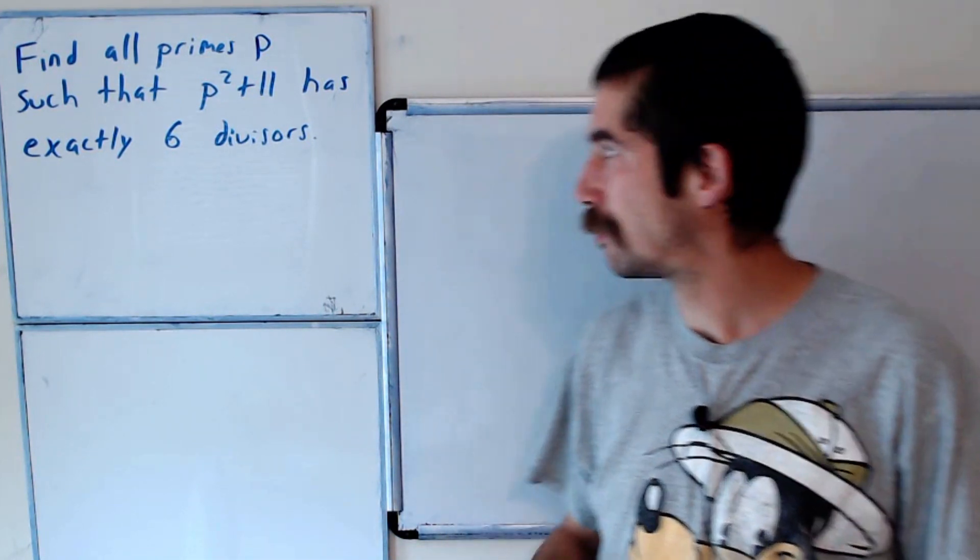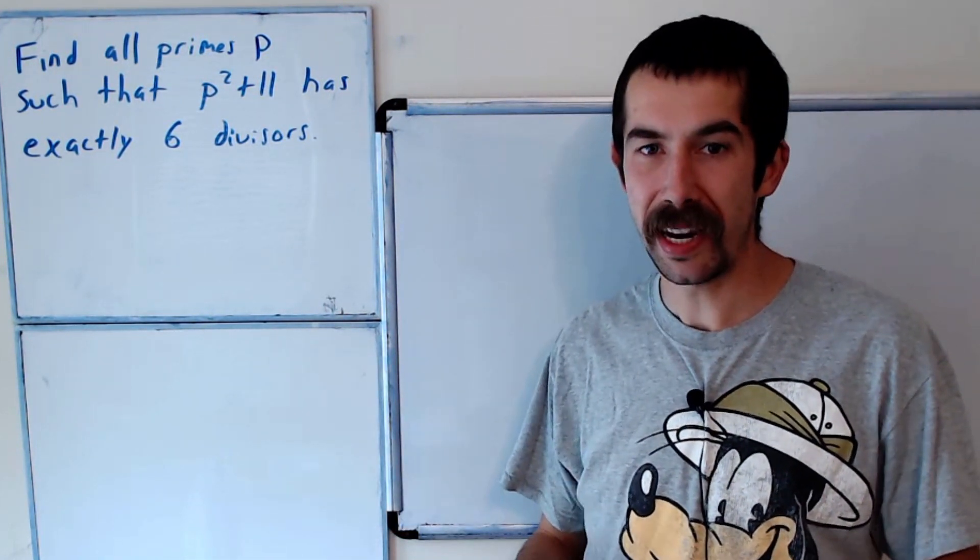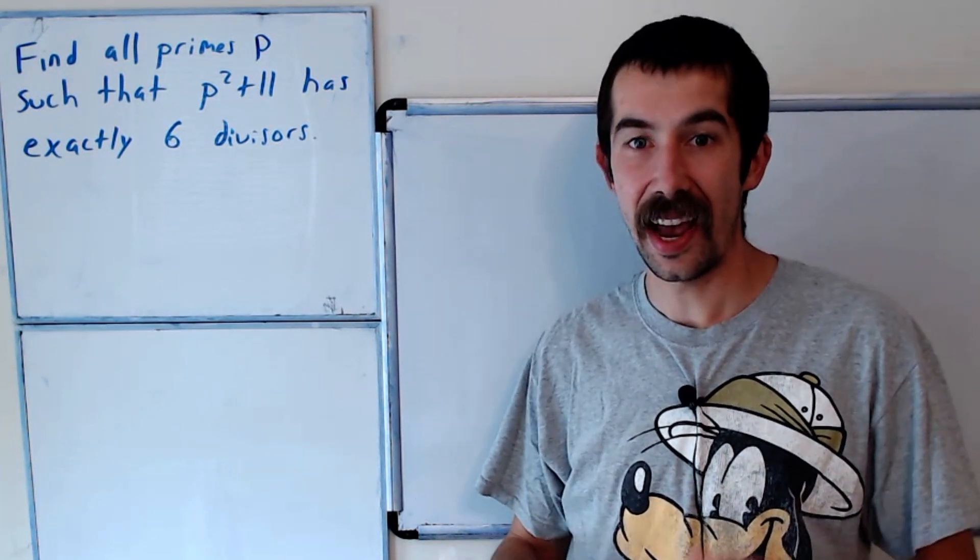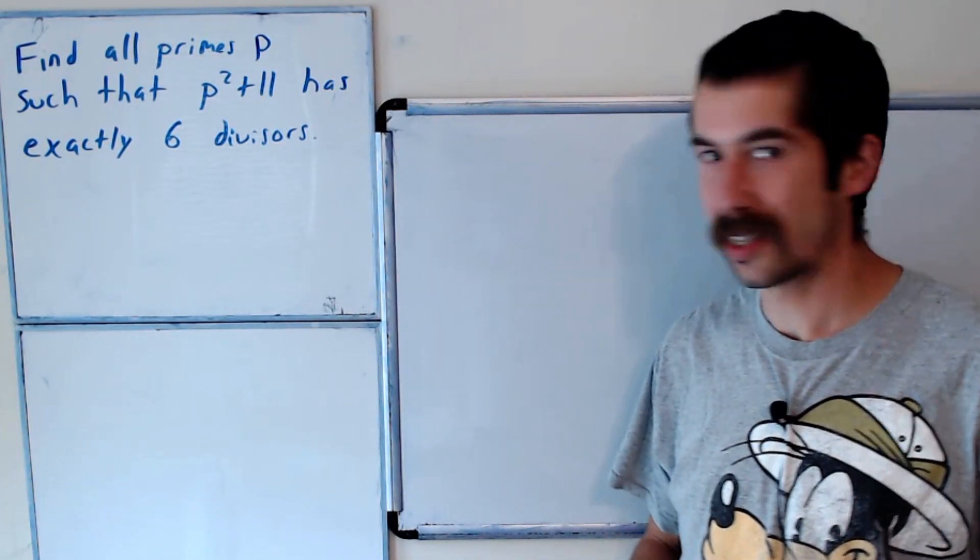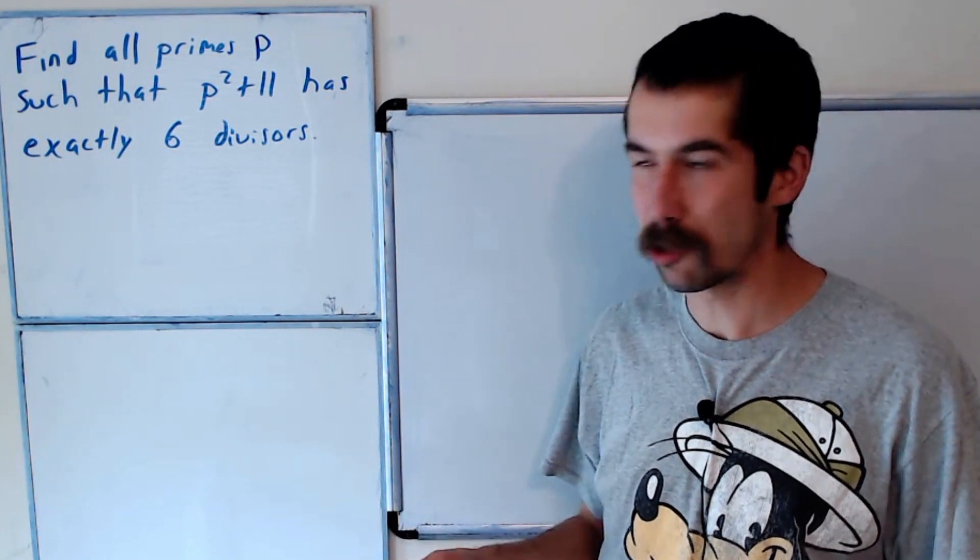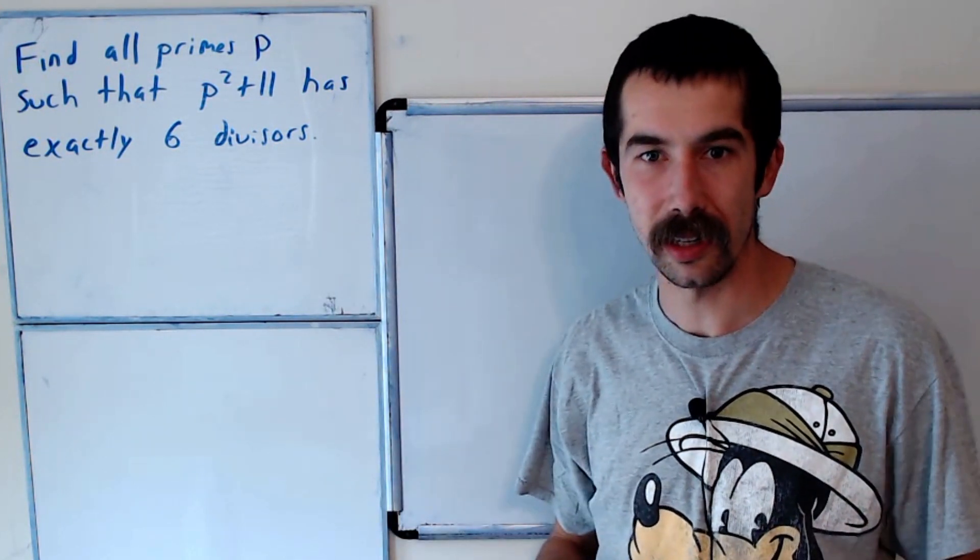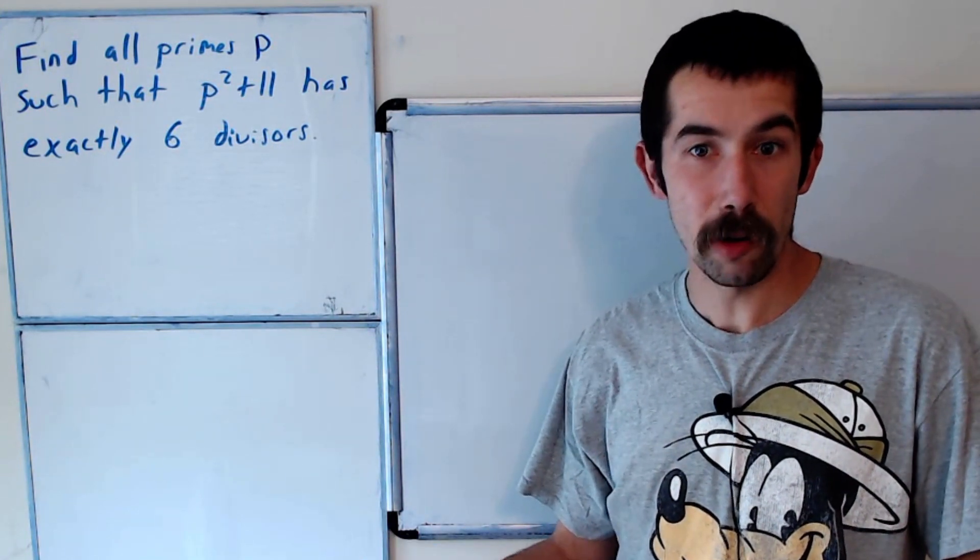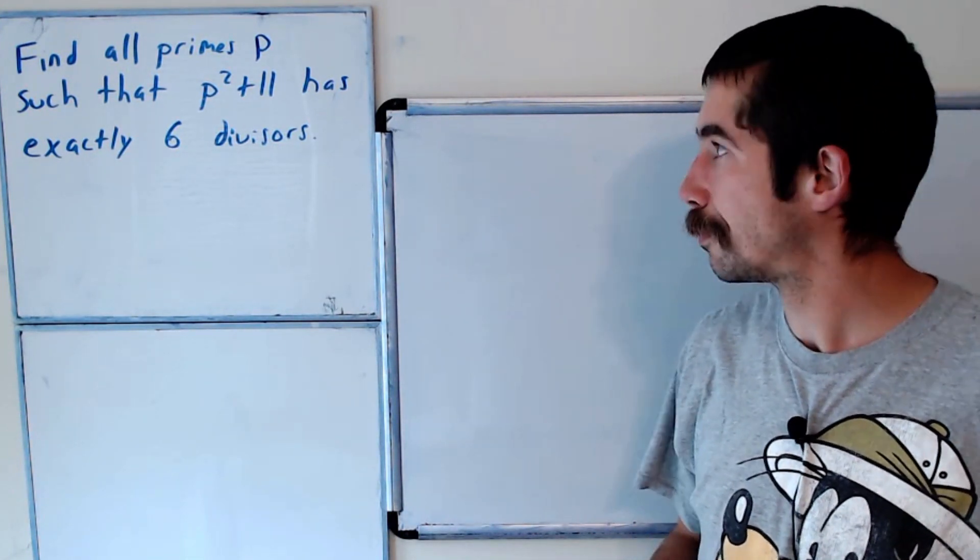I got a number theory question for you today. Find all primes p such that p squared plus 11 has exactly 6 divisors. So this counts 1 and p squared plus 11 as the divisors as well. So try it on your own, or you could just watch me solve it.